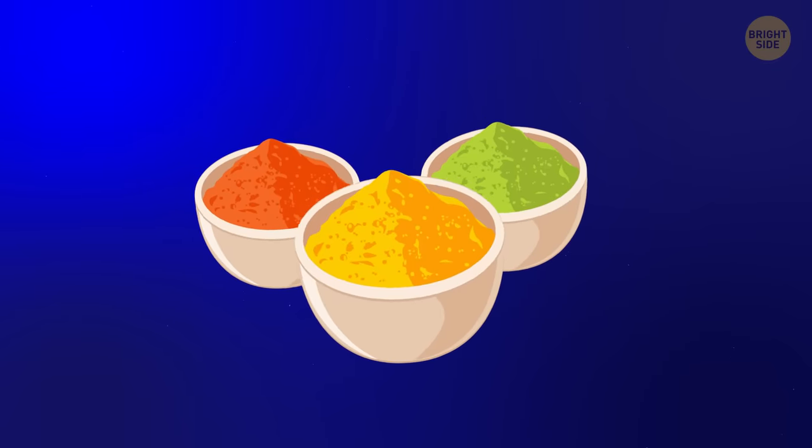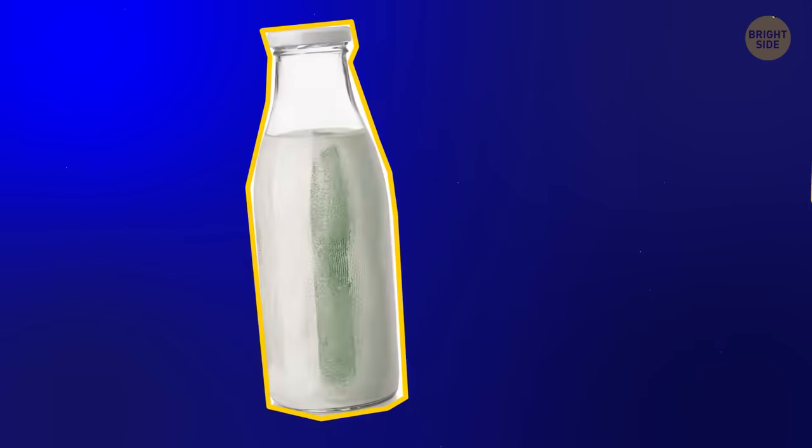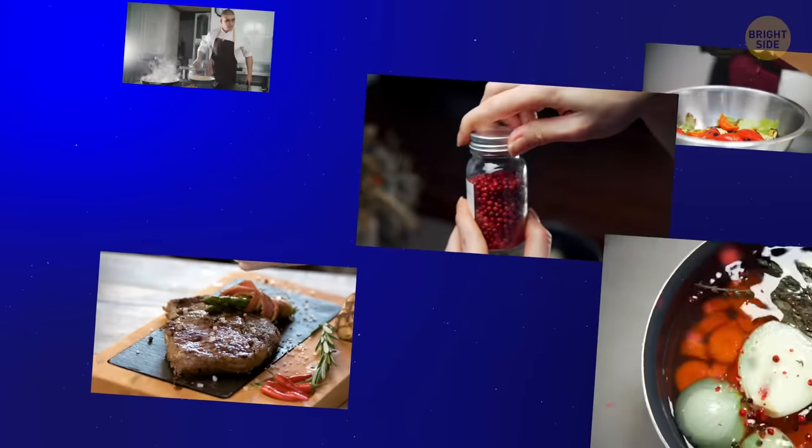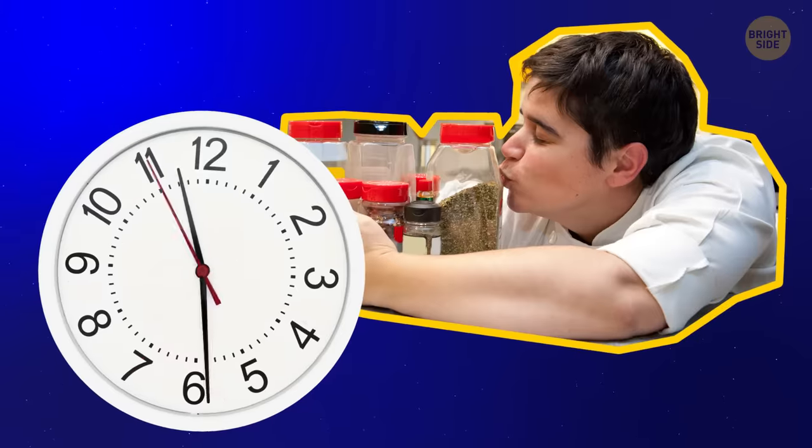Number 6: Expired spices. We all know that we need to toss out milk when it gets sour. But spices are a different story. We hold on to our spices in case we need to give our dishes some extra flavor. But we keep them way too long. You see, spices won't expire in the sense of making you ill,